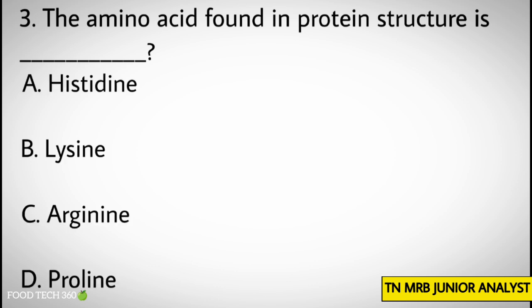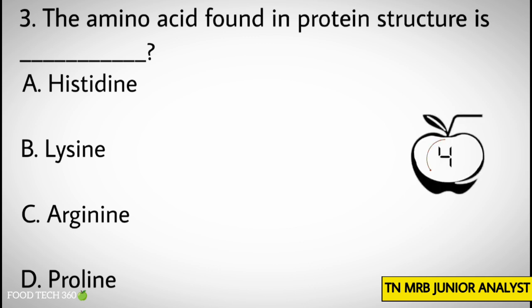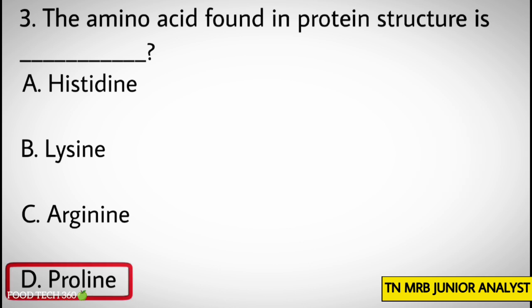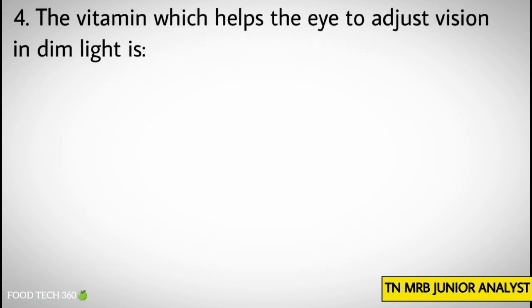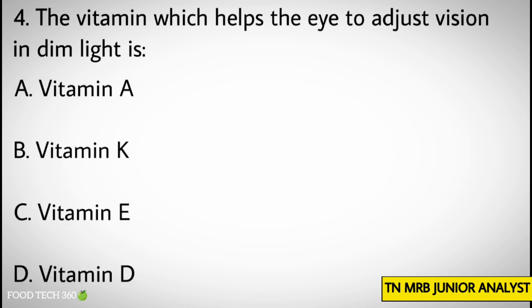Question number 3: The amino acid found in protein structure is — Options: A. Histidine, B. Lysine, C. Arginine, D. Proline. Correct answer: D. Proline.